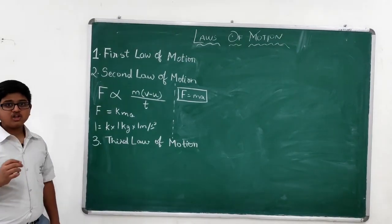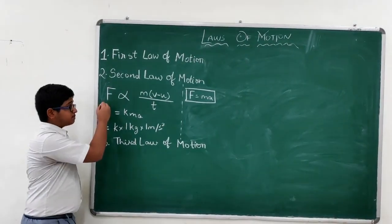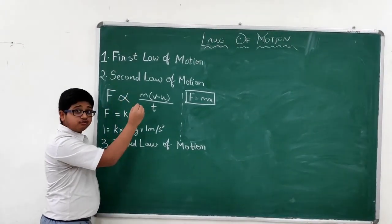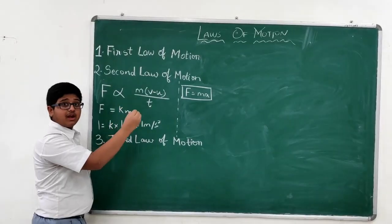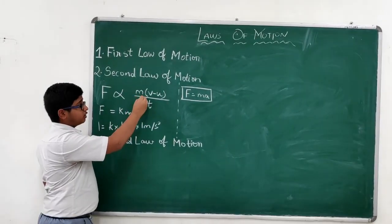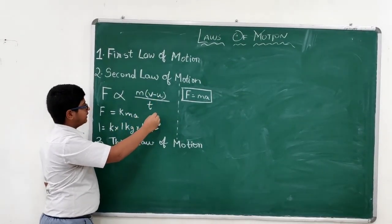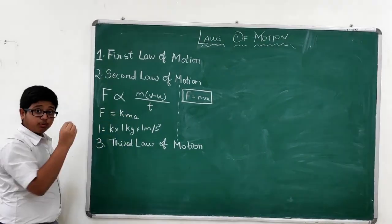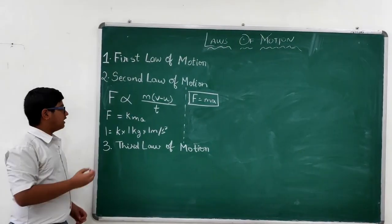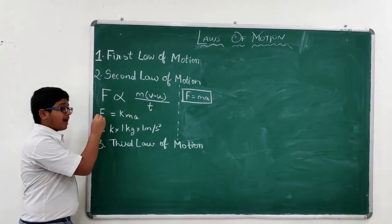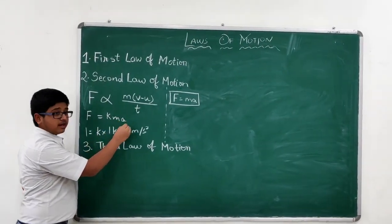Now, the second law states that force is proportionate to rate of change of momentum. We can write it as mass into acceleration, into V minus U by T. Now, to make an equation, we need to take a constant. Let's take the constant K. Then, F is equal to K into M into A.